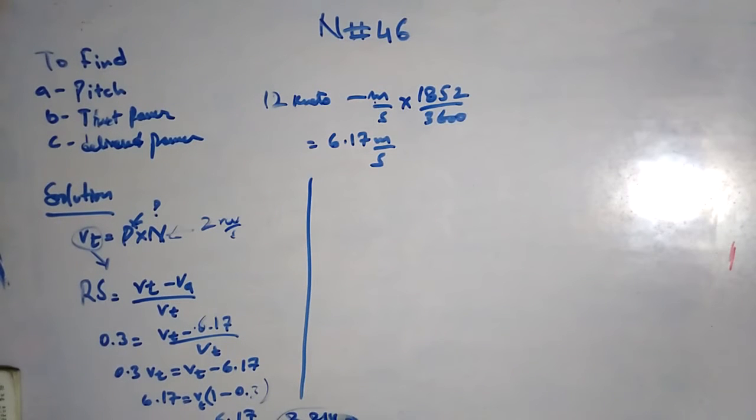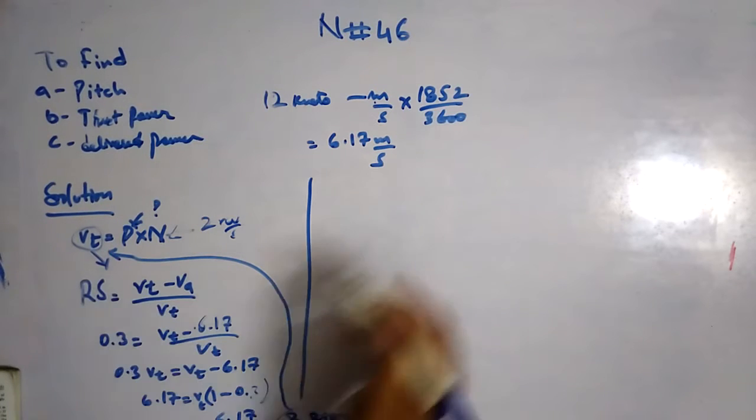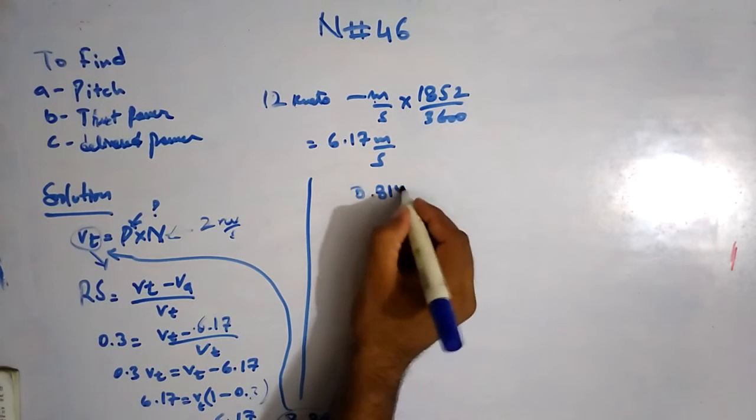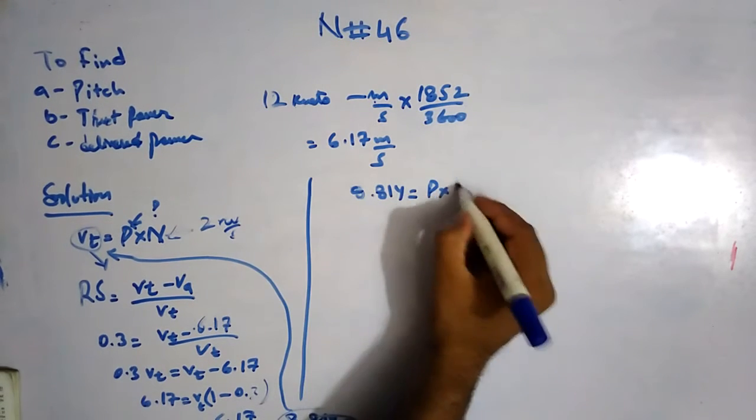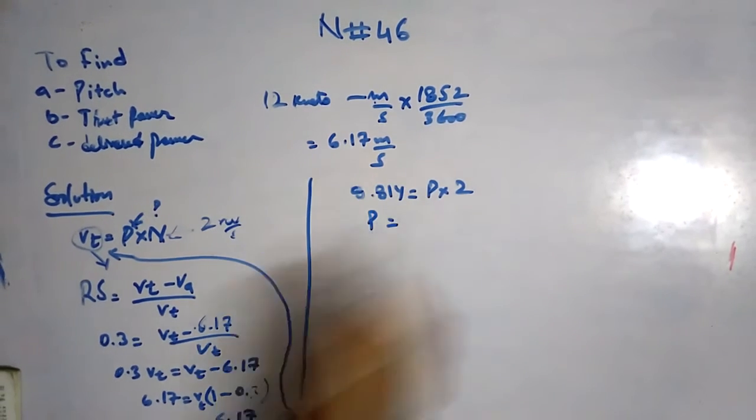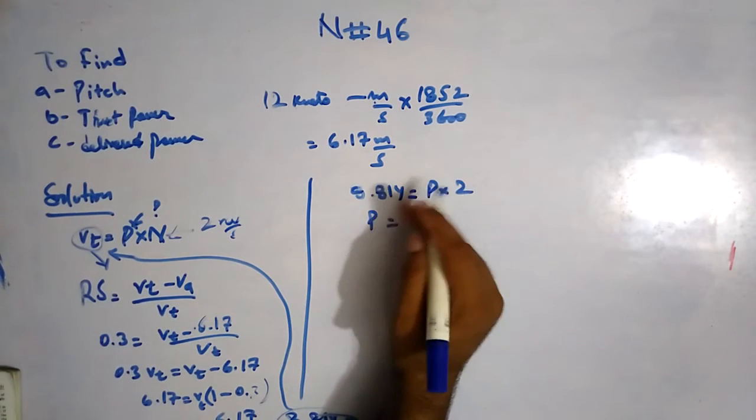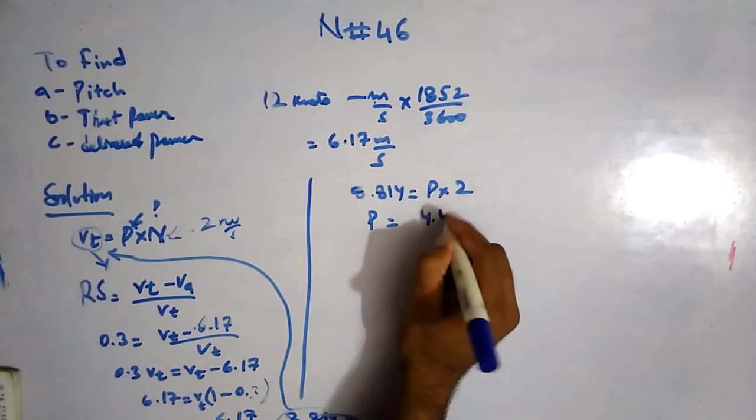Putting this into the equation: 8.814 equals P into 2 revolutions. So the pitch is 8.814 divided by 2, which gives 4.40 meters. The pitch is 4.4 meters.